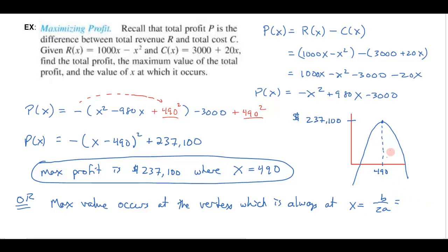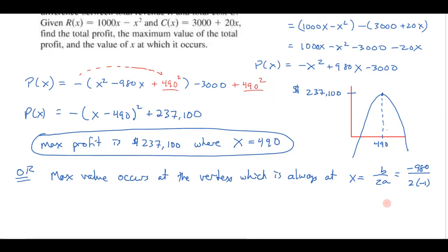So all I have to do, come up here to my profit function, -980, my b is 980, 2 times -1, my a value is -1. And so notice that that sure enough is where x is, 980 divided by 2 is 490. So there's my x value,